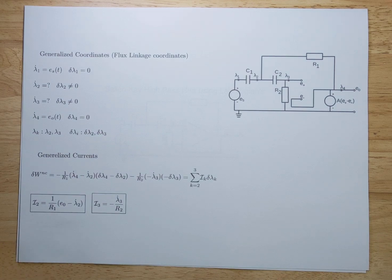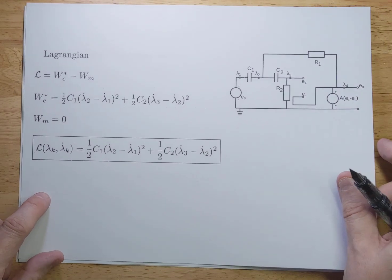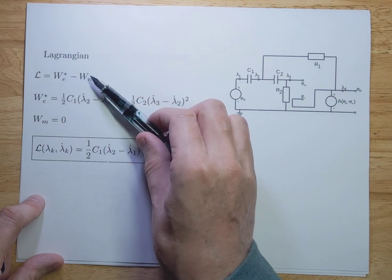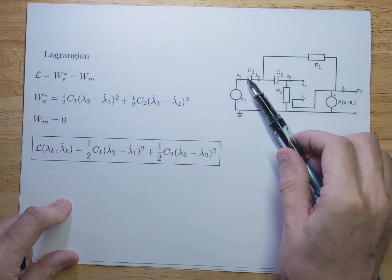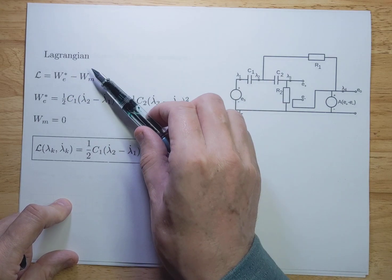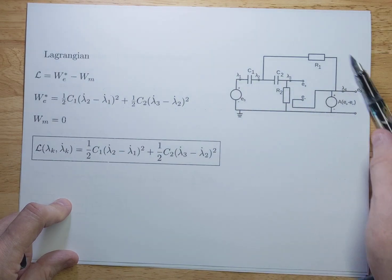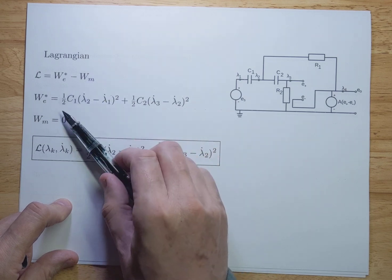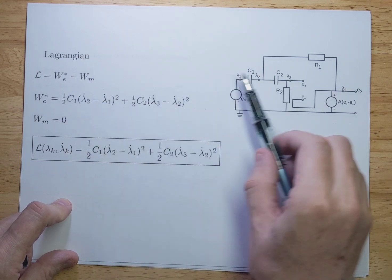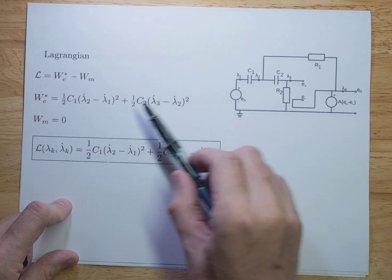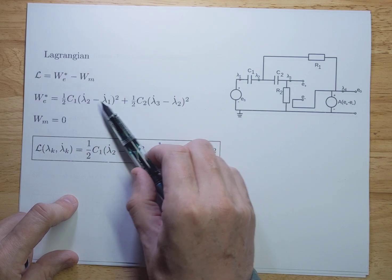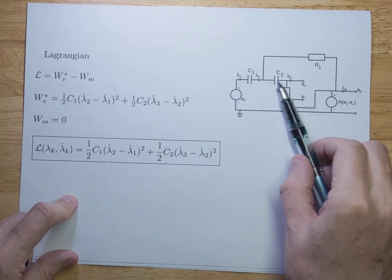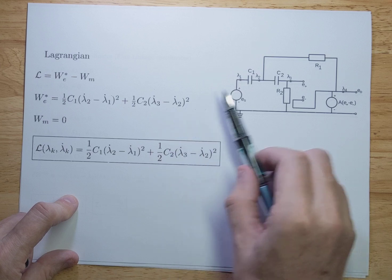Now we are in a position to calculate Lagrangians. The Lagrangian, as always, is the kinetic energy minus the potential energy. The kinetic energy can be found in capacitors and the potential energy in inductors, which are not present in this circuit, so Wm will be 0. But We will have a value — that's essentially the voltage difference between those two points — which is lambda 2 dot minus lambda 1 dot squared times capacitance C1. And for the other one, it will be lambda 3 dot minus lambda 2 dot, the voltage difference squared times C2.